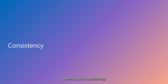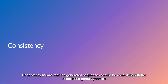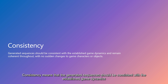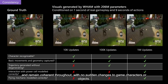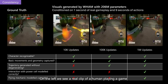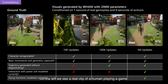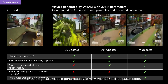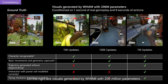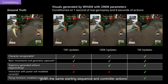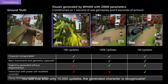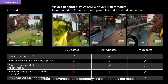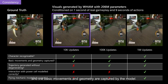We first look at consistency. Consistency means that the generated sequences should be consistent with the established game dynamics and remain coherent throughout with no sudden changes to game characters or objects. On the left, we see a real clip of a human playing a game. On the right are visuals generated by WAM with 206 million parameters given the same starting sequence and controller actions. We see that after only 10,000 updates, the generated character is recognizable and the basic movement and geometry are captured by the model.